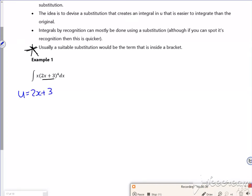It's just the same procedure. So du dx is 2. Rearrange for dx, so du over 2 is dx. I know that bit in there is u, and this bit is du over 2. So it becomes an integral of x u to the 4 du over 2.